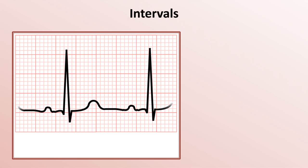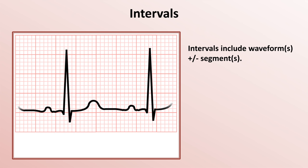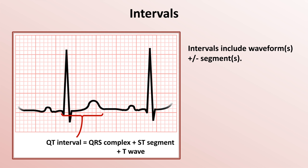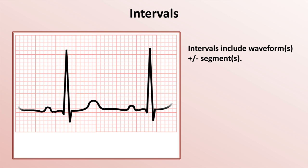Next, we have the intervals. Intervals are durations of time that include one or more waveforms, plus or minus one or more segments. For example, the PR interval is the sum of the durations of the P-wave and the PR segment. The QRS interval is equal to the duration of the QRS complex alone. The QT interval is equal to the sum of the durations of the QRS complex, ST segment, and T-wave. And finally, the RR interval is the duration of all waveforms and segments within one cardiac cycle.